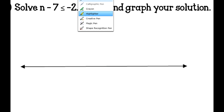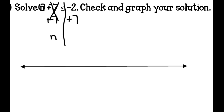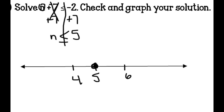Solve N minus 7 is less than or equal to negative 2. Add the opposite — to get rid of negative 7 so the variable is by itself, add positive 7 to both sides. What you do to one side, you must do to the other. The negative 7 cancels, and N is less than or equal to negative 2 plus 7, which is 5. I graph 4, 5, and 6, use a closed circle on 5, and shade everything to the left.